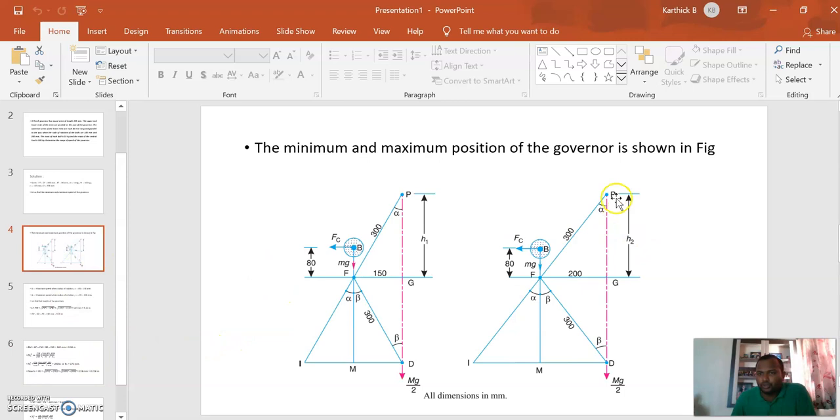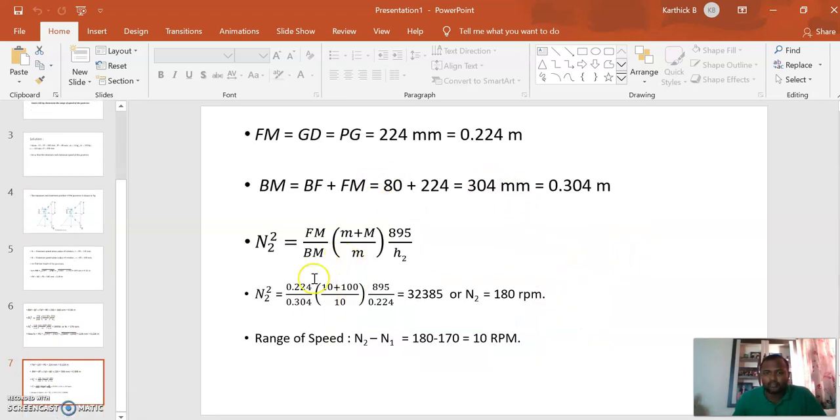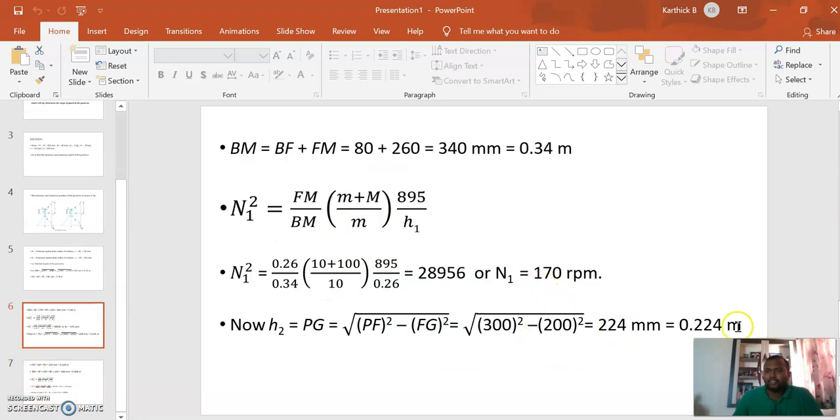Now we have to find h2. This is PG again, which equals FM. For finding PG, using Pythagoras theorem, h2 equals square root of 300 squared minus 200 squared. We find the answer is 0.224 meters.